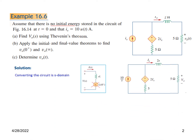First, we convert this circuit into the S-domain. Since there is no energy stored, the initial condition term for the inductor will be 0, so we replace the inductor with SL, which is 2S in this case. The current source Is, which is 10u(t), becomes 10 over S in the S-domain. Small ix becomes capital Ix, and small v0 becomes capital V0.